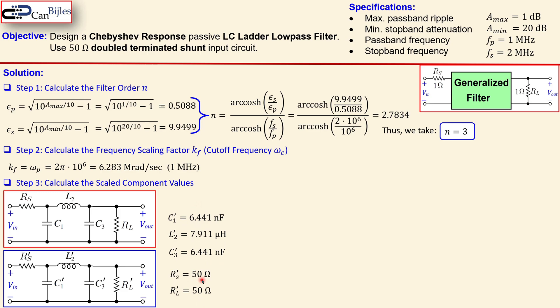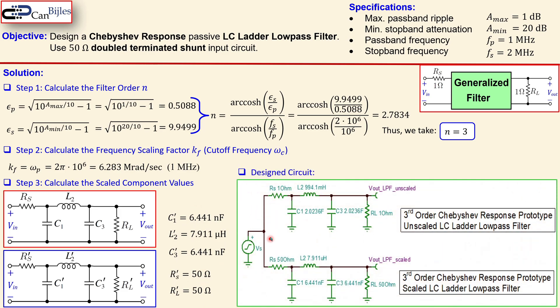So these are the values collected together and this is now the designed circuit. The first one is the Chebyshev response prototype unscaled LC ladder low pass filter and this is now the scaled version we require from our specifications. You see again this 2.0236 F and also for C3 and also for L2 you see that 0.9941 H or 994.1 mH. This is all scaled up to this required filter. One ohm goes to 50 ohms, one ohm here goes to 50 ohms and you see also the values here. This is now the designed circuit and we will now simulate this circuit and check that these specifications are met.